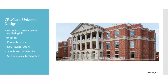Examples of the Size and Space for Approach and Use principle in the CRUC include movable furniture such as chairs and tables, which is great for people with different handedness and those who use mobility aids or wheelchairs. The dish disposal also has multiple levels. Additionally, the foyer of the CRUC provides a lot of open space for people to store mobility aids.